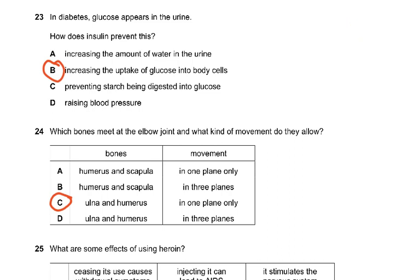Coming on to question 23: in diabetes, glucose appears in the urine. How does insulin prevent this? Insulin prevents this by increasing the uptake of glucose into the body cells.